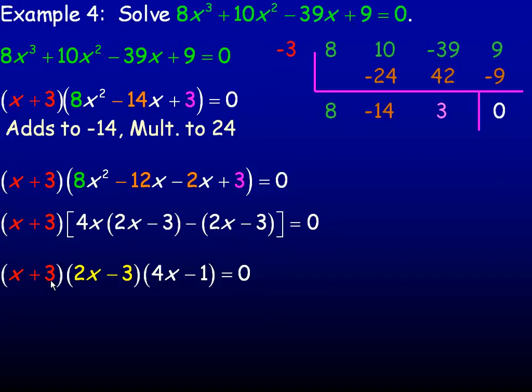If we set x + 3 to 0, we'll get negative 3, because negative 3 plus 3 makes 0. If we set 2x - 3 equal to 0, bring the 3 over, divide out the 2, and you get 3/2. And the same with the 4x - 1. Solving for x, add 1 to both sides, you get 4x = 1, divide out the 4, and you get 1/4.